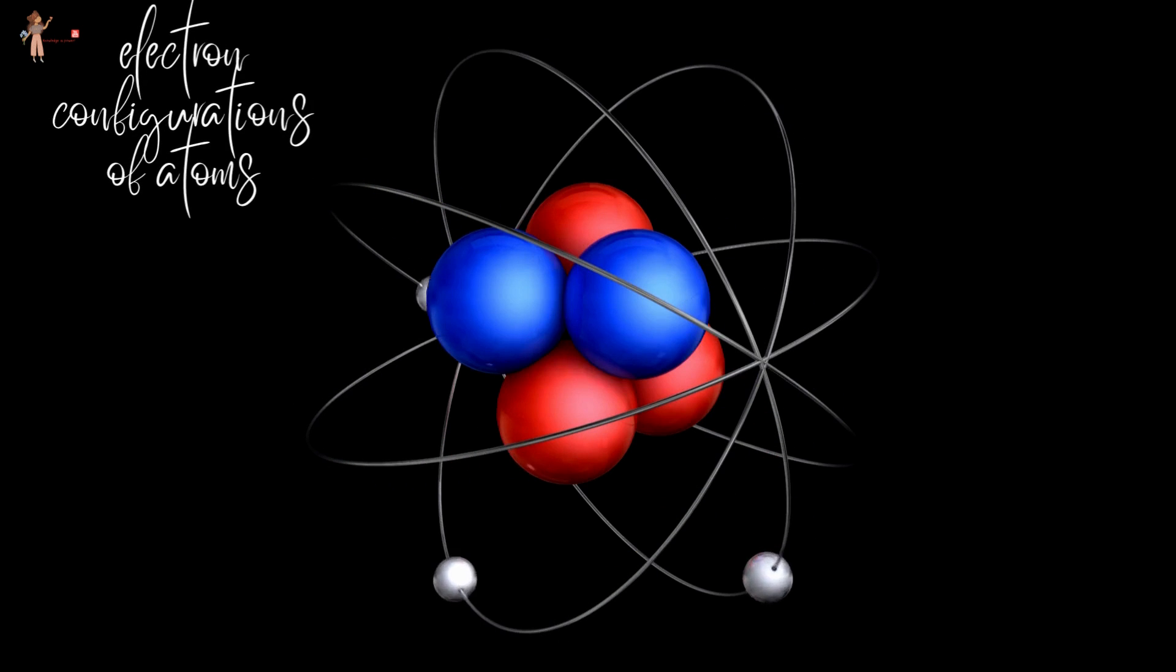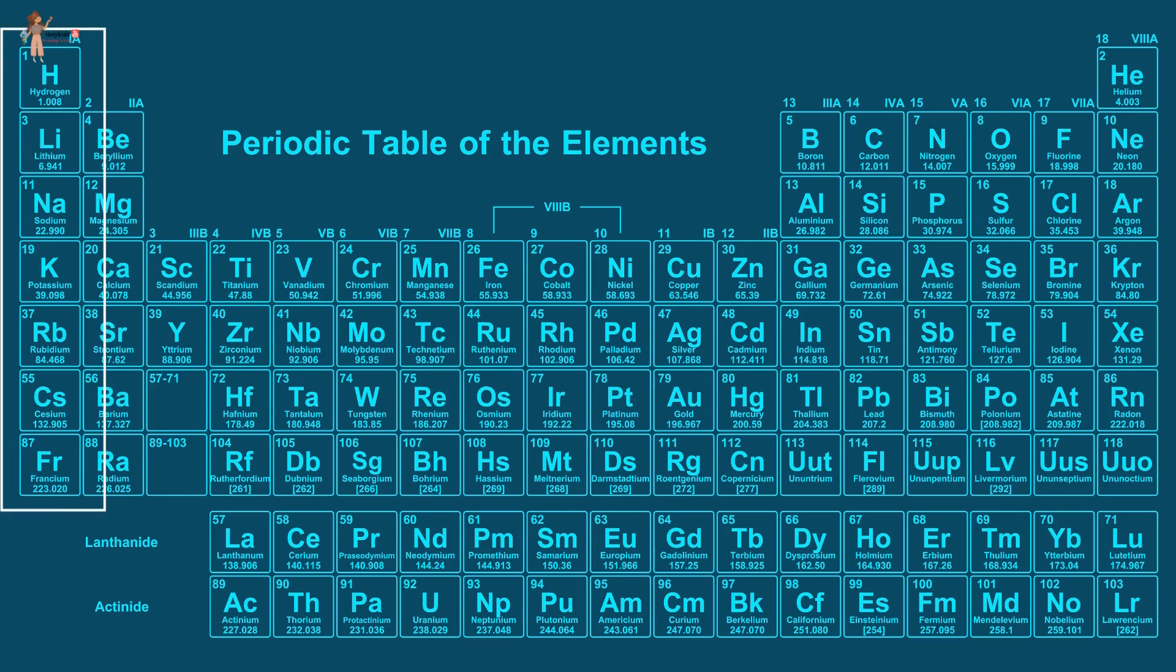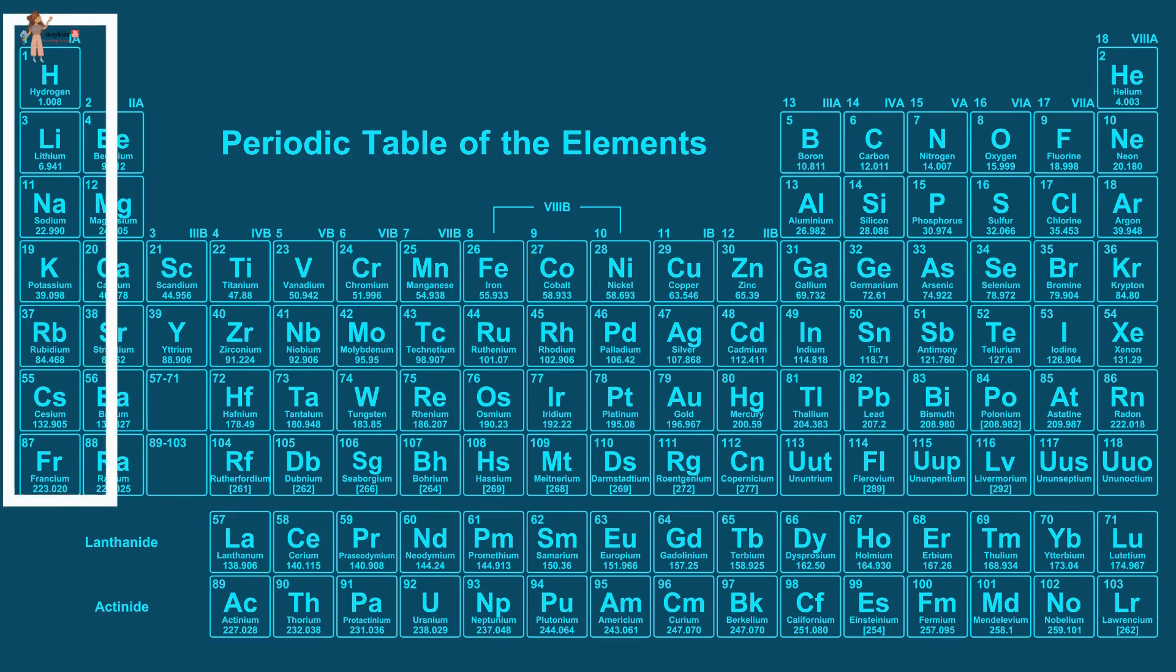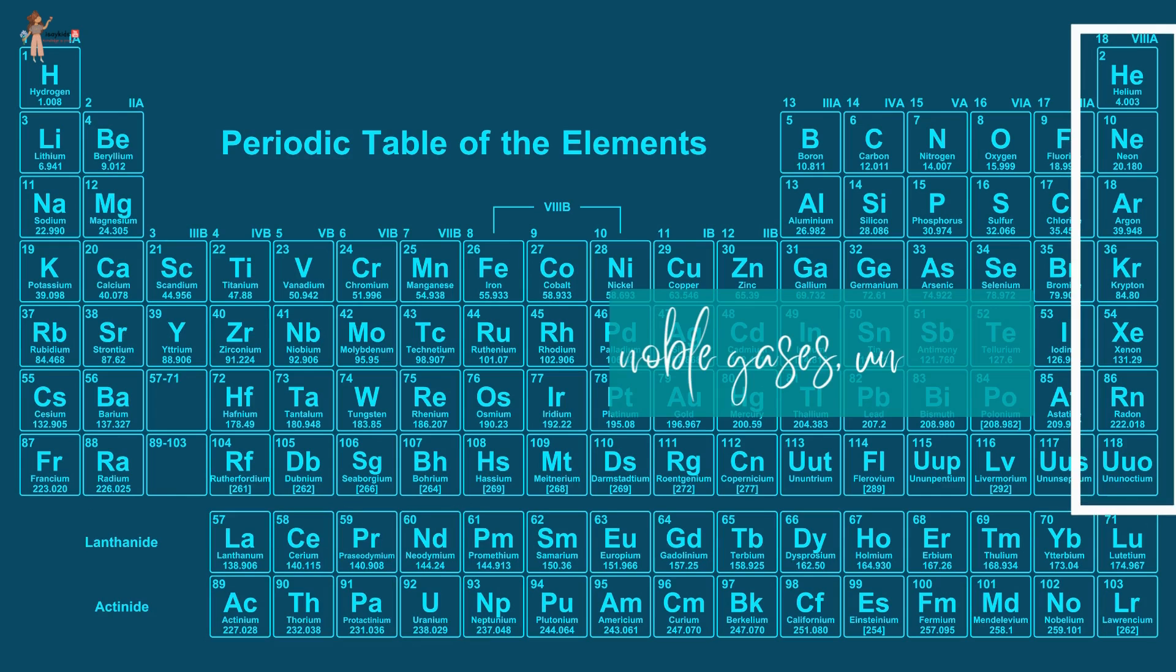For example, all the elements in the first column are reactive metals that have a valence of plus one, whereas there are noble gases, which are the least reactive of all, in the rightmost column, which is the 18th column in the periodic table.